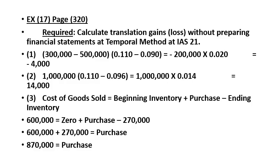Example: Exercise 17, page 320. Required: calculate translation gains or loss without preparing a financial statement — temporal method — at International Accounting Standard number 21.